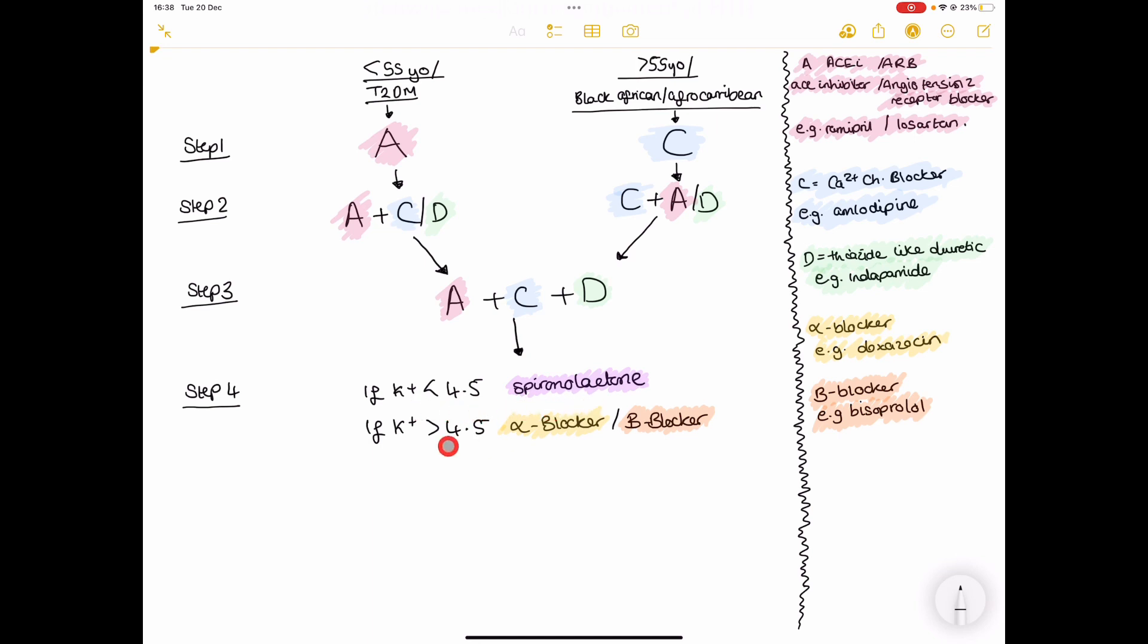If the potassium is less than 4.5, you want to add in spironolactone. If potassium is more than 4.5, NICE recommends that you add in either an alpha blocker or a beta blocker.